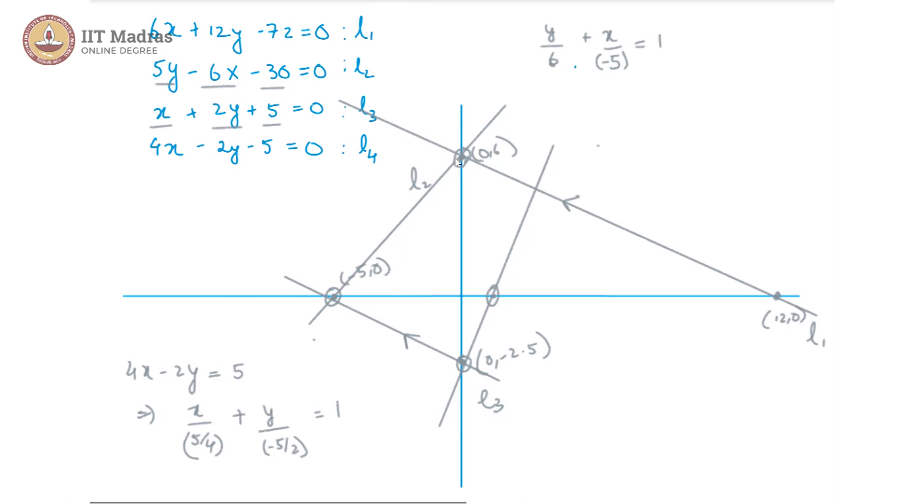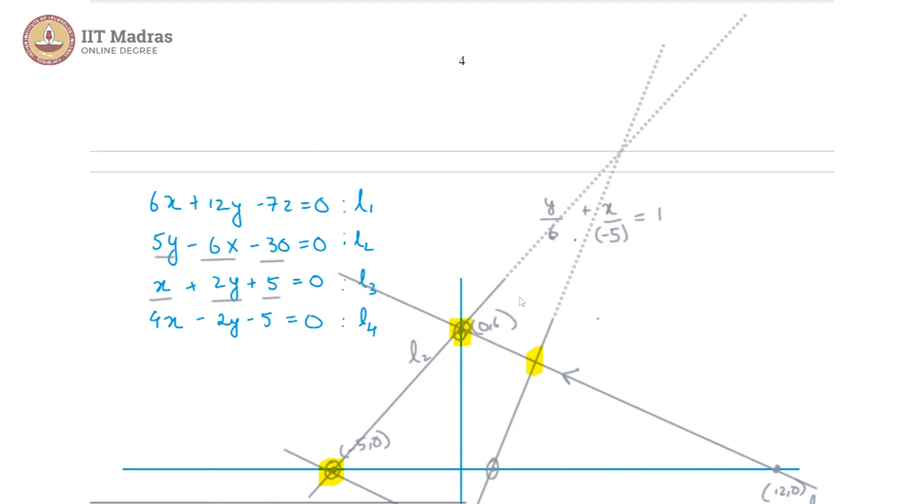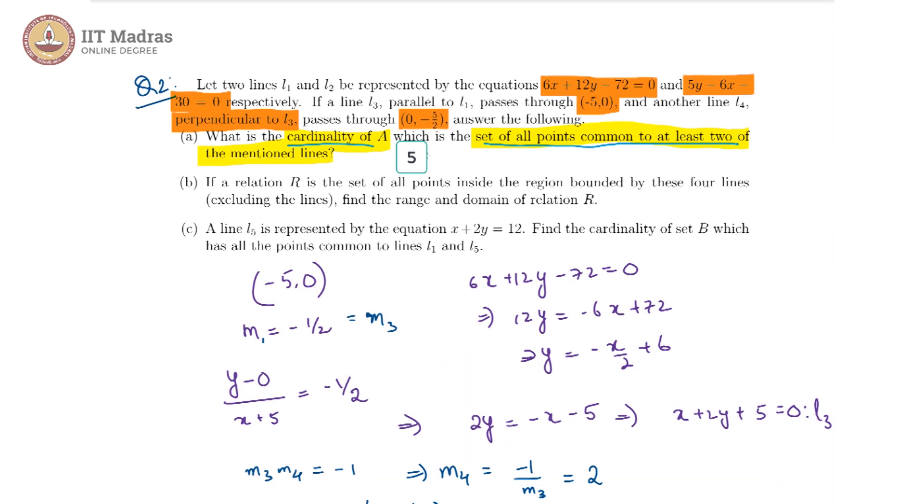Overall there are 4 points which we see here, and on top of that L2 and L4 would intersect at a distant point somewhere over there. Furthermore, L1 and L3 are parallel, they do not intersect at all. So all put together we have 5 points in common.